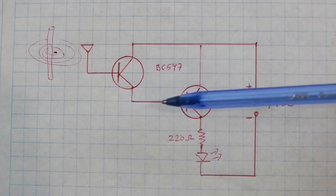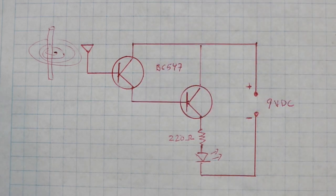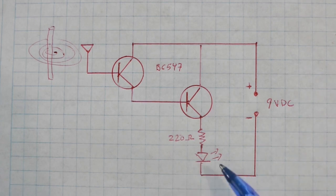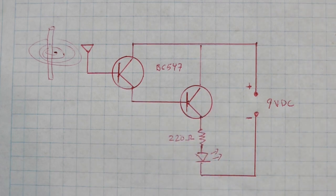However, it is still too small to light up an LED so it is fed to the base of a second transistor that further amplifies the current.